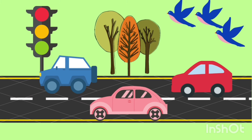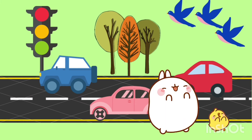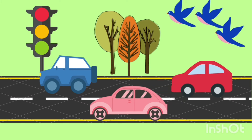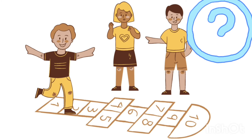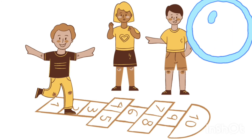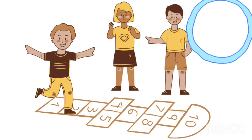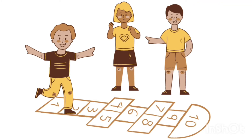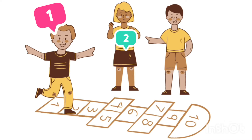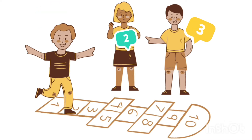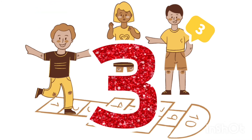Let's have a look at some more examples. Would you like to help me? How many kids are playing here? One, two, three — there are three kids playing here.